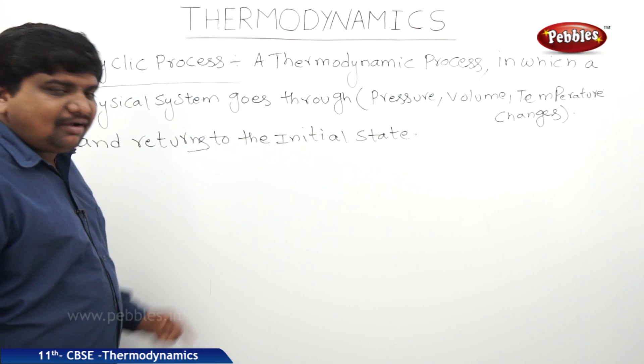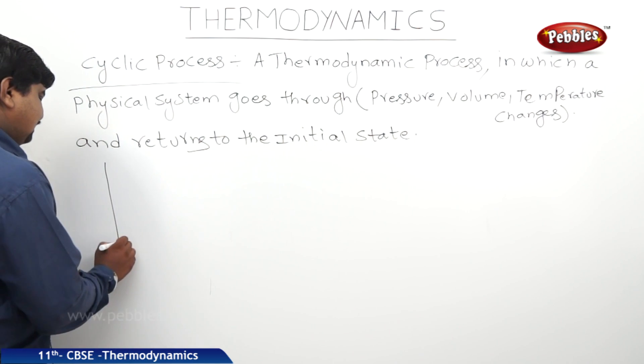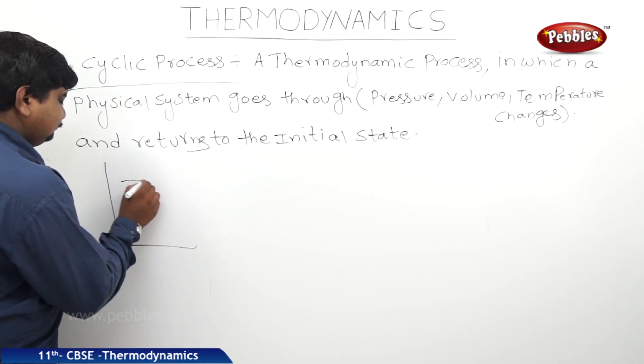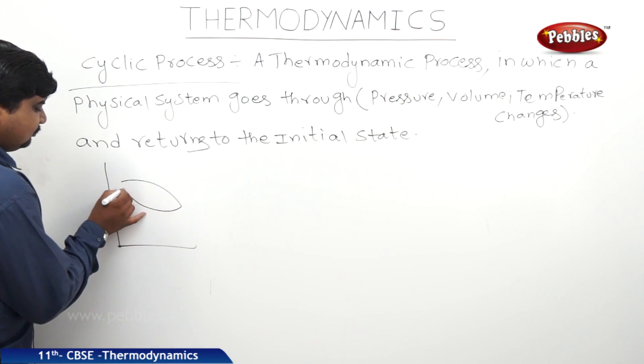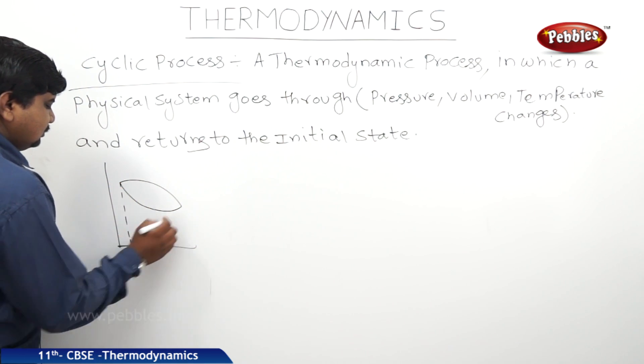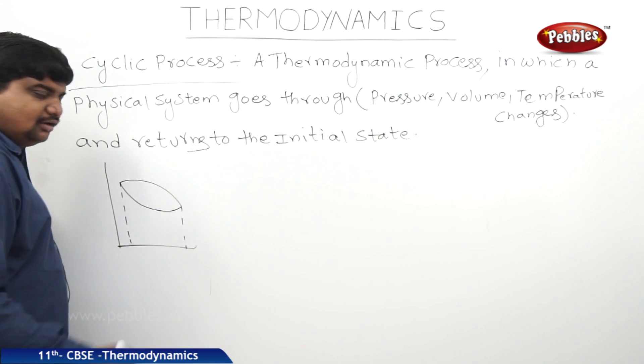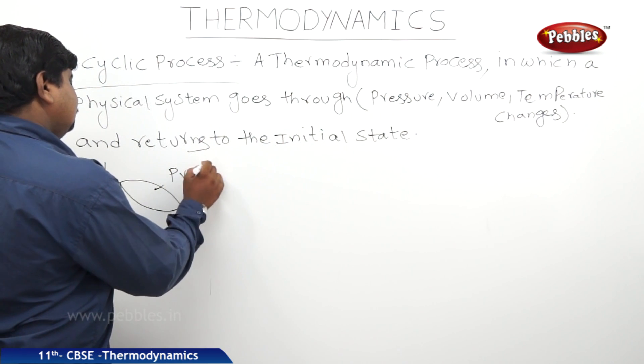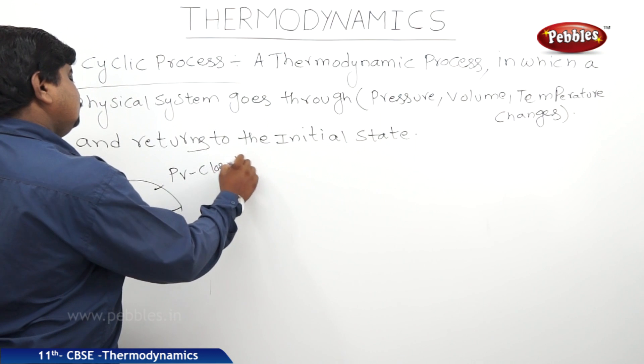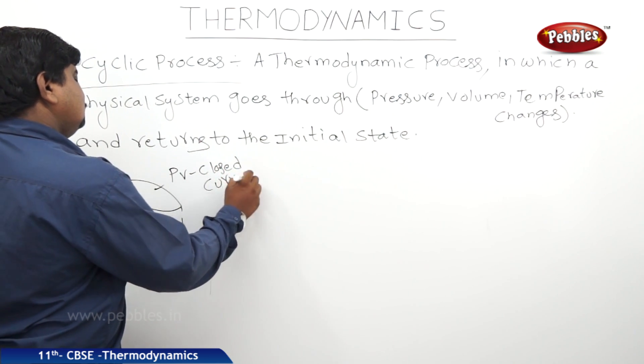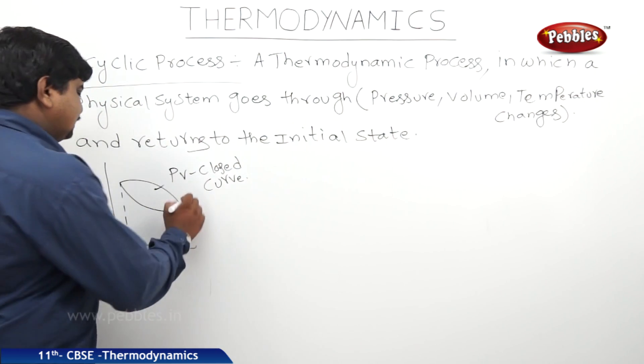As we discussed the graph earlier, the graph will be like this. Again, it is coming to the original state. So the area under this PV curve is a closed curve. The area of this curve will give the work done in this process.